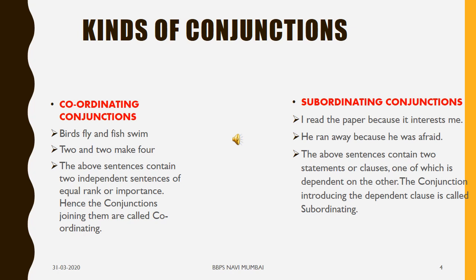Now why do we say subordinating? Because the two clauses — 'because it interests me' — is dependent on the other: 'I read the paper.' Therefore, the conjunction introducing the dependent or subordinate clause is called the subordinating conjunction. This is the first class of conjunction — I hope you have understood.